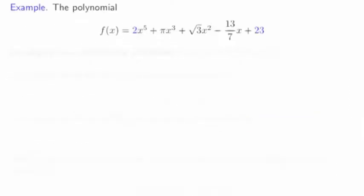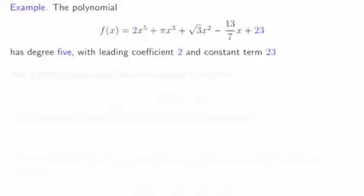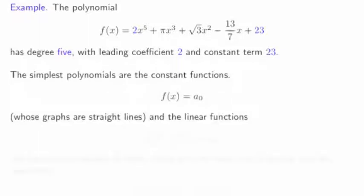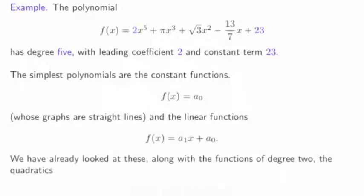For example, the polynomial f(x) equals this expression has degree 5, leading coefficient 2, and constant term 23. The simplest polynomials are the constant functions, whose graphs are straight lines, and the linear functions, whose graphs are lines. We've already looked at these, along with functions of degree 2, the quadratics.